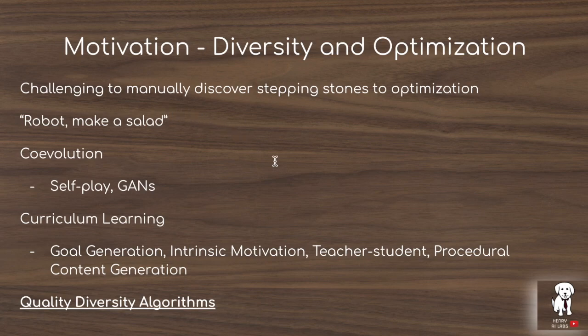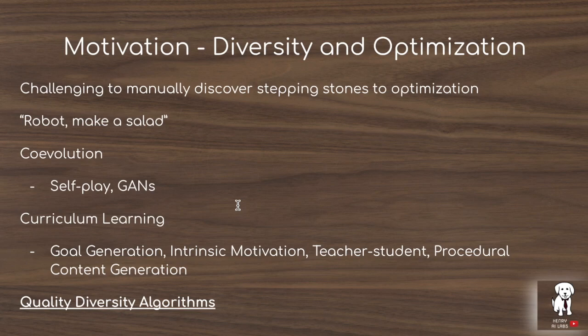Some other interesting areas of co-evolution include self-play, like in AlphaStar, where you play against different versions of the algorithm, or the Generative Adversarial Network framework, where the generator has this natural curriculum that arises with the training of the discriminator, and the discriminator similarly co-evolves with the generator. It's also similar to algorithms like curriculum learning, goal generation, intrinsic motivation, teacher-student curriculum learning, or procedural content generation — ideas of designing stepping stones for learning agents to go from simple behaviors to more complex tasks.